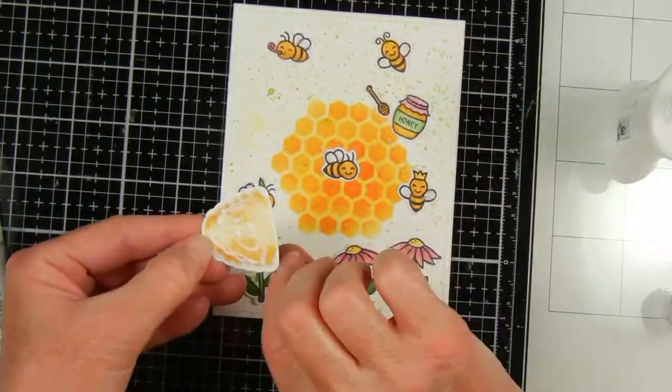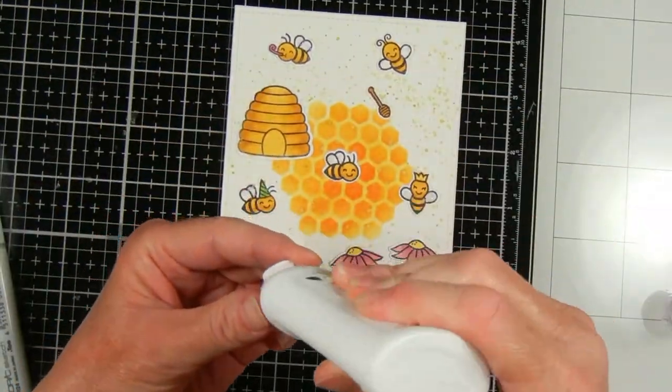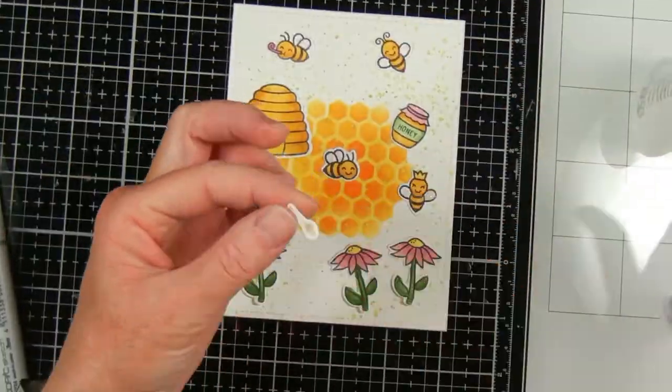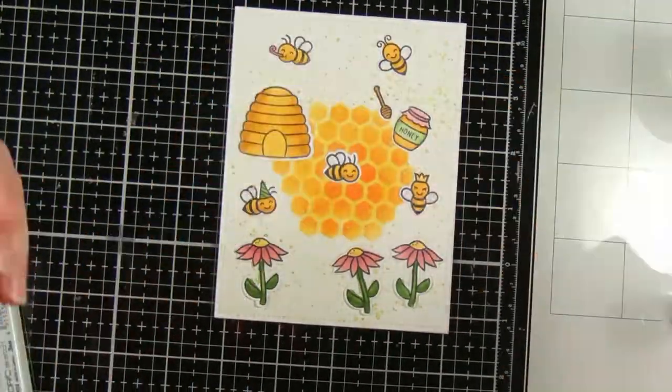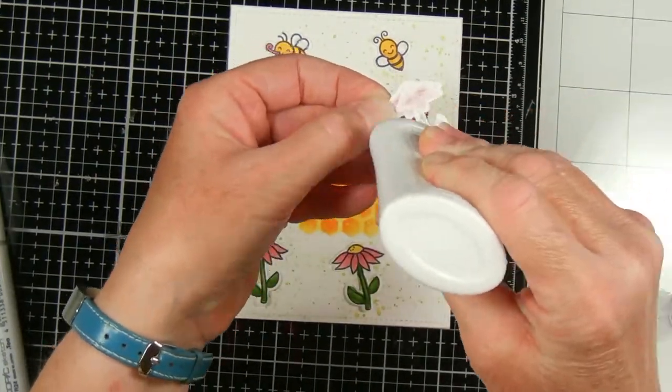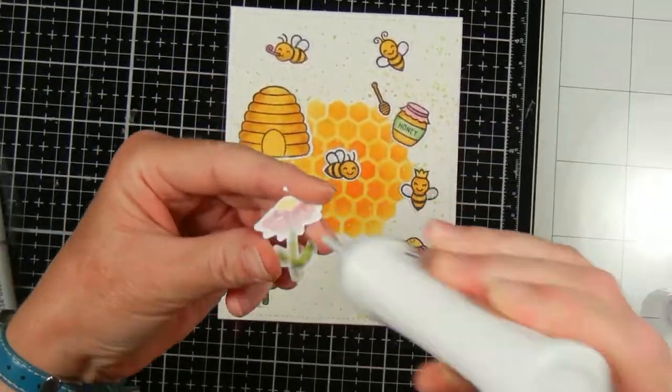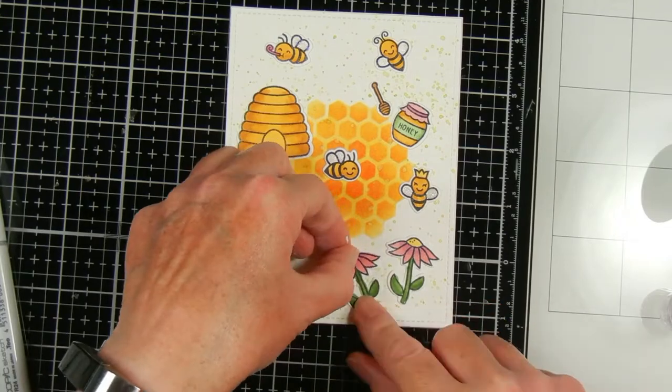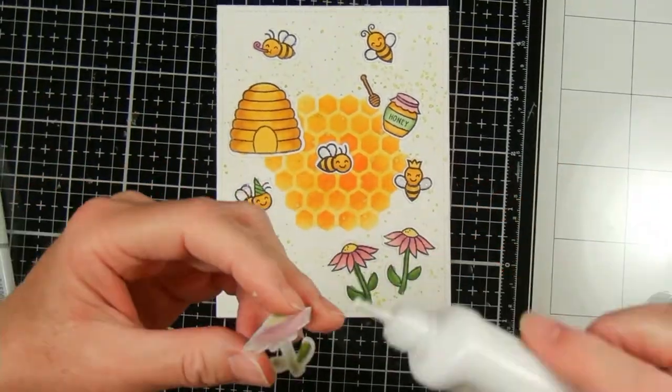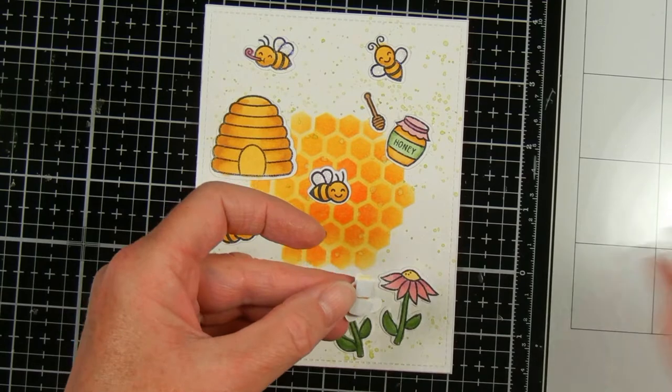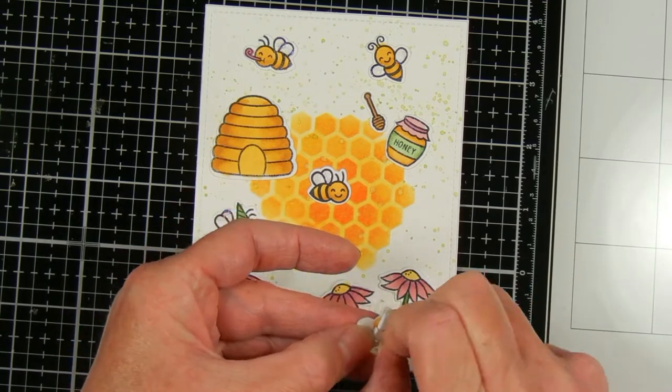Then I just used my Nuvo Deluxe glue to glue down everything except my bees. There's a little bit of a smudge on the card where I got some yellow ink when I did my stenciling. But that's okay. I just covered it up with my hive. Then I just used my foam squares to pop up the bees.